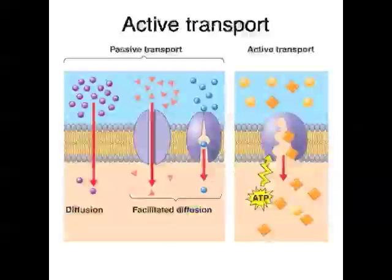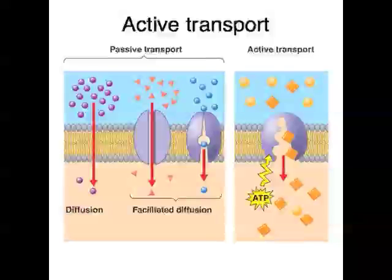Another way that particles move across plasma membranes is via active transport. This is similar to facilitated diffusion in that the molecules move through protein channels, but the difference is that active transport requires energy to be expended. This happens when substances need to be acquired really quickly, or need to be moved against the concentration gradient. Active transport requires ATP to proceed, so it goes through protein channels and uses up ATP.